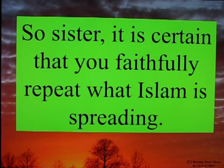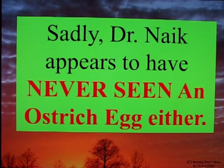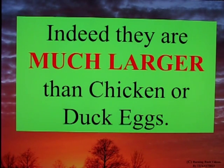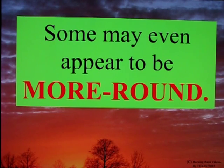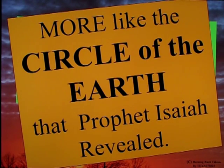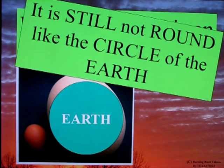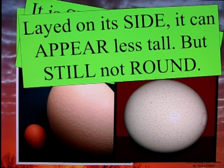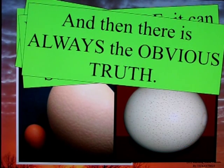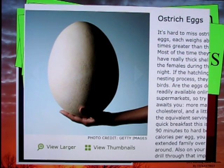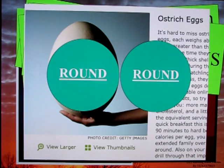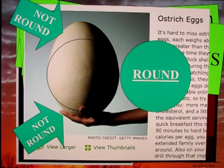So, sister, it is certain that you faithfully repeat what Islam is spreading. Sadly, Dr. Naik appears to have never seen an ostrich egg either. Indeed, they are much larger than chicken or duck eggs. Some may even appear more round — more like the circle of the earth that Prophet Isaiah revealed. But while this is an ostrich egg, it is still not round like the circle of the earth. Laid on its side it can appear less tall, but it is still not round like the circle of the earth. Ostrich eggs — round? This is what round looks like. Let's put round on an egg. The egg is not round. It's egg-shaped. Egg-shaped is not round.